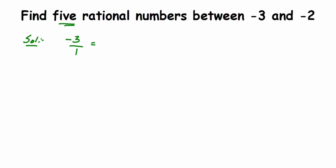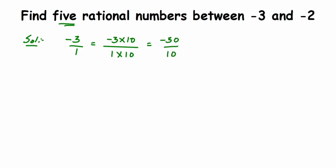I'm going to multiply by 10 because it's easy. Remember, there are infinitely many rational numbers between two rational numbers, so your answer may vary. So: minus 3 over 1 multiplied by 10 over 10 equals minus 30 over 10. Similarly, minus 2 over 1 multiplied by 10 over 10 equals minus 20 over 10. The denominator has to be the same, so multiply by the same number for both rational numbers.